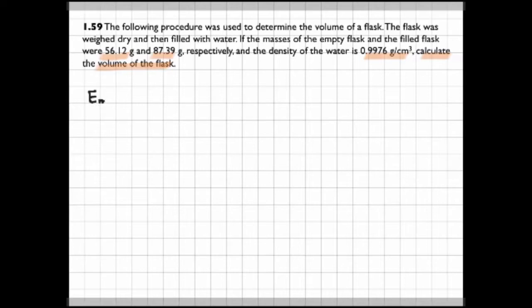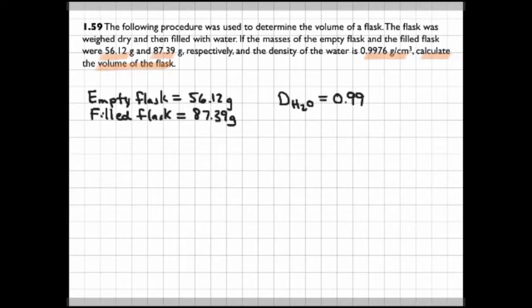Okay, so the empty flask weighs 56.12 grams. The filled flask, 87.39 grams. We'll write the density of the water, 0.9976 grams per centimeter cubed. Notice the units on the density is grams per centimeter cubed, or mass per volume.